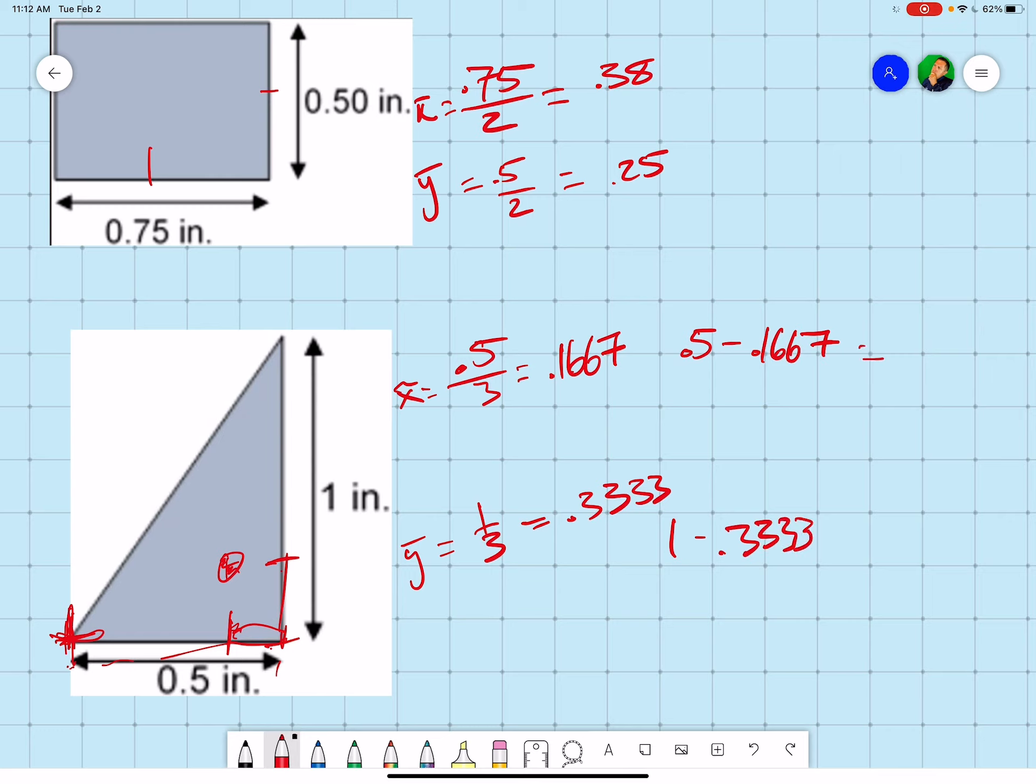So my 0.5 minus the 0.1667 is going to be 0.333.